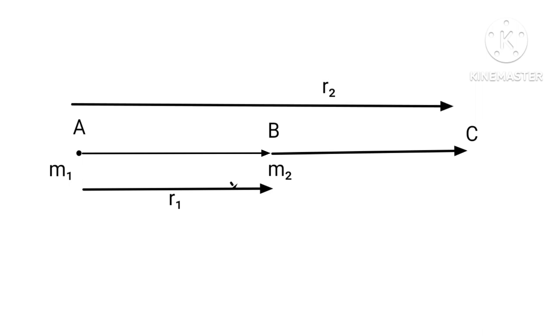Let a particle of mass m1 be kept at point A and another of mass m2 is kept at a distance r1 away at B. A force F is applied to take m2 to point C which is at a distance r2 away from A. Our job is to calculate the change in potential energy from B to C.